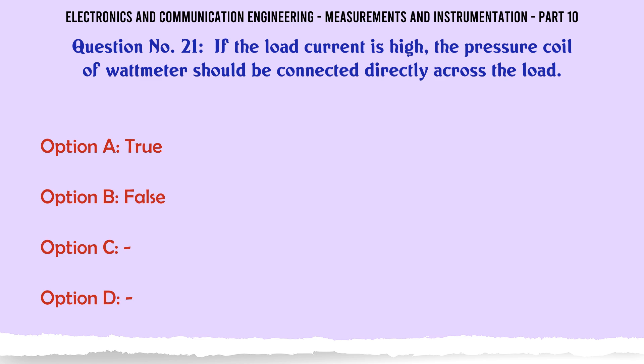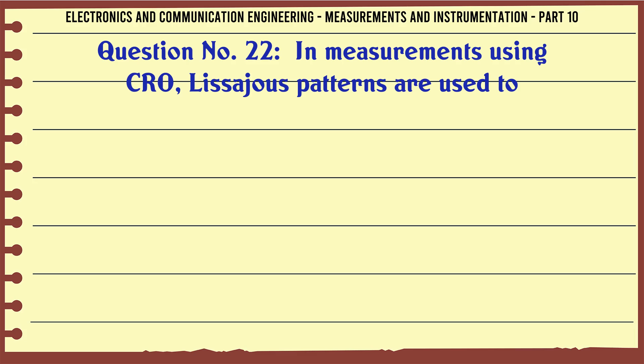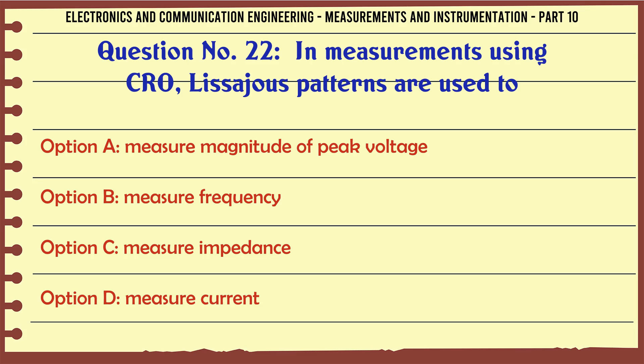If the load current is high, the pressure coil of wattmeter should be connected directly across the load: A) true, B) false. The correct answer is true.